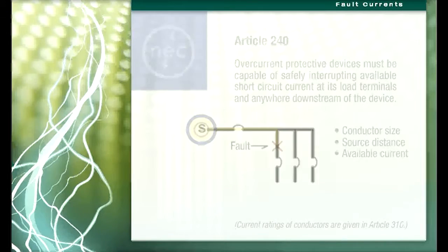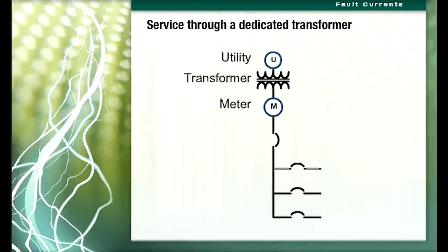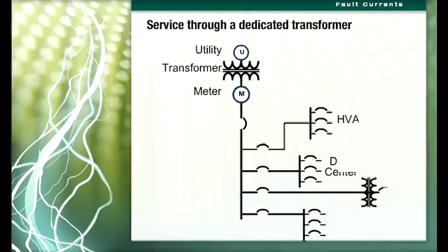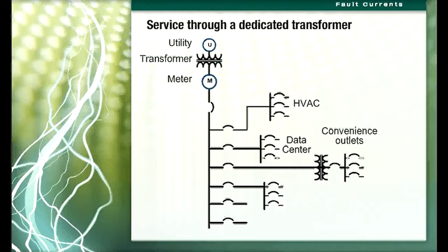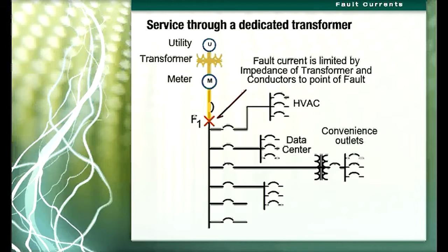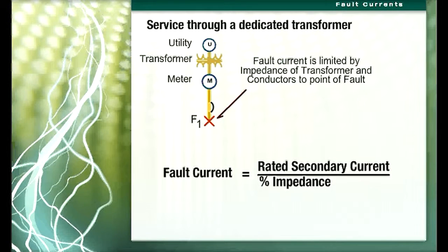Except where the service to a facility is limited by the utility infrastructure, when the service is a dedicated transformer a conservative estimate of fault current on the secondary of the transformer can be made by assuming an unlimited available KVA at the primary. In the circuit shown here, the service is through a dedicated transformer. The short circuit or fault current available at F1 will be limited by the impedance of the transformer and the conductors to the point of the fault. The fault current available at the secondary terminals of a transformer, assuming an unlimited source at the primary, can be calculated by dividing the rated secondary current by the percent impedance.